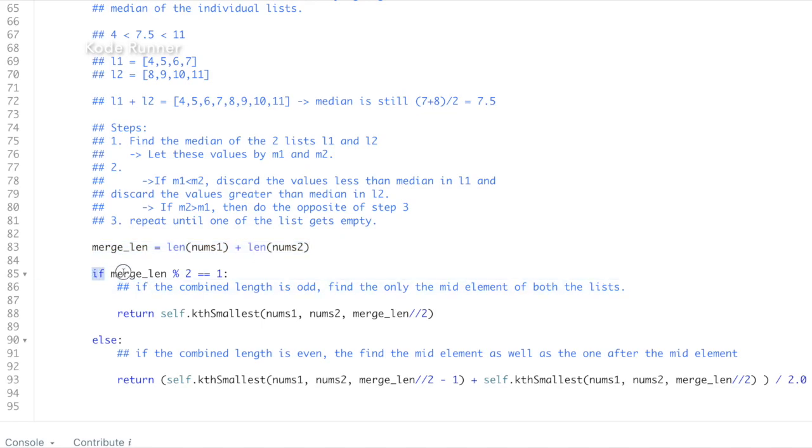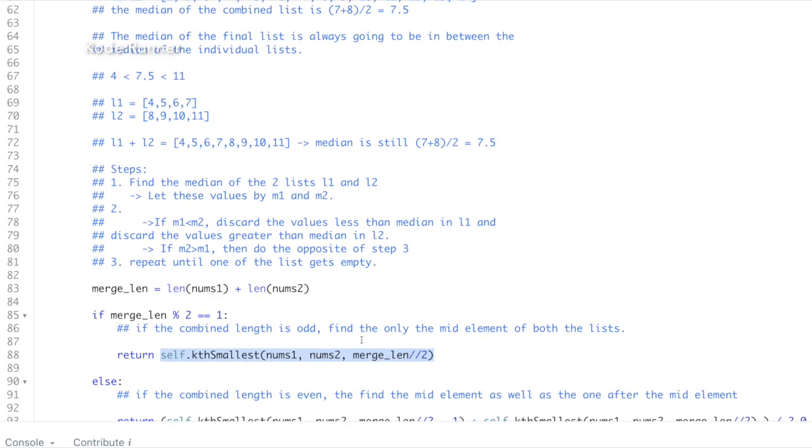we find the combined length of both the arrays nums1 and nums2 as follows. Considering whether the merge length is even or odd, we try to find the what will be the value at a particular index if both the arrays nums1 and nums2 were merged.